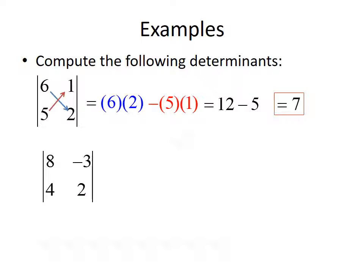Here's another example: find the determinant of the matrix 8, negative 3, 4, 2. To find the determinant, we first multiply the diagonal, 8 times 2, that gives us 16. Then we multiply the off-diagonal, 4 times negative 3, that gives us negative 12, and we subtract that. So 16 minus a negative 12 is 28. The determinant of this matrix is 28.